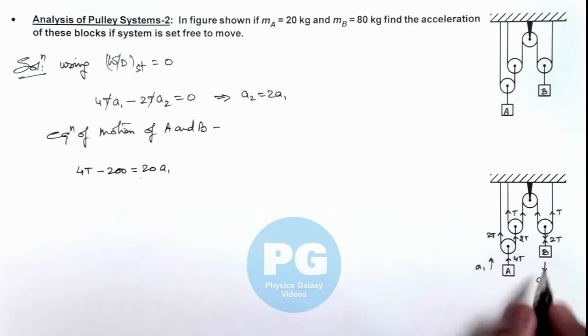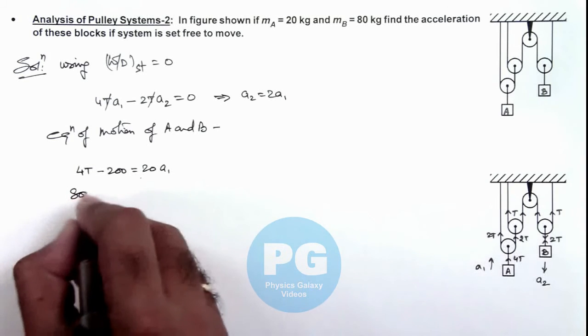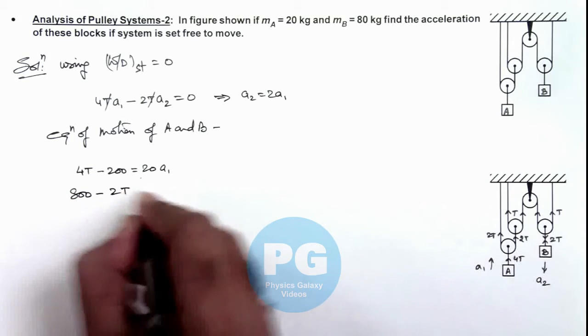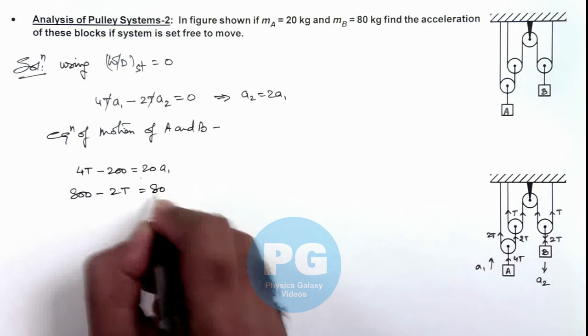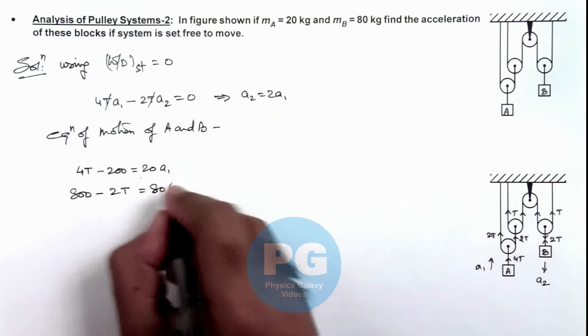And another equation for block B, as it is coming down we can write its weight that is 80g is 800 minus 2T is equal to 80 a₂. And the value of a₂ we can write as 2 a₁.